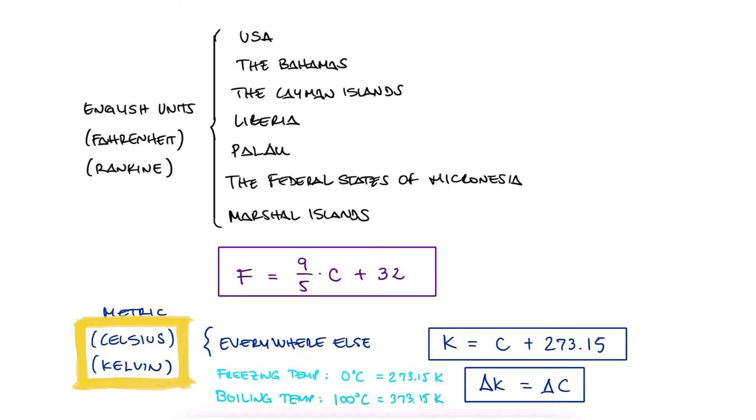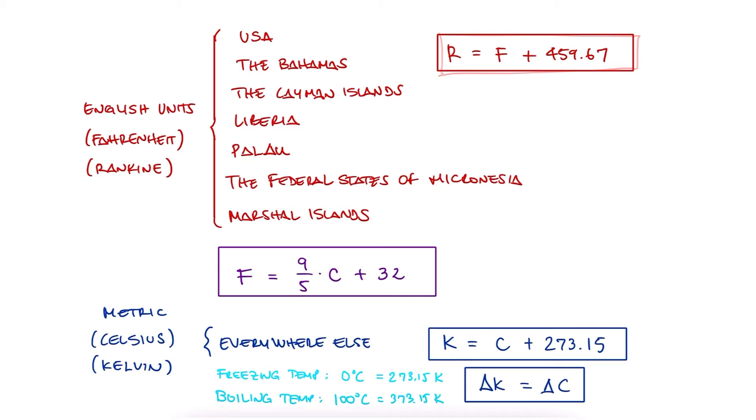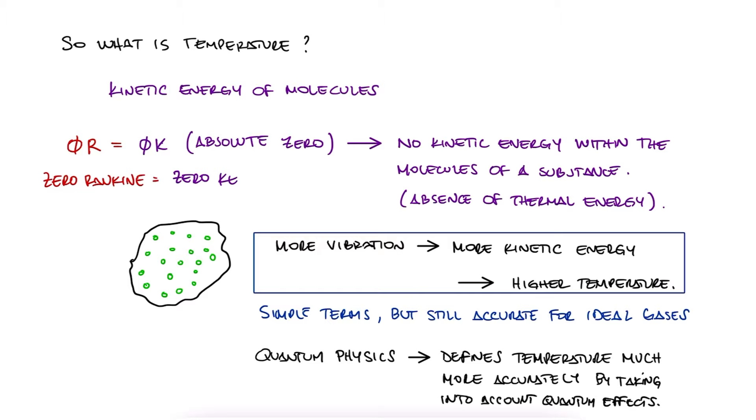And finally, we have Rankine. Just like Kelvin is to Celsius, Rankine is just a shift of the Fahrenheit scale. Fahrenheit and Rankine are both English units, just like Celsius and Kelvin are metric units. Rankine is just 459.67 more than degrees Fahrenheit. And zero Rankine is also the absence of thermal energy, just like zero Kelvin. And just like we related Celsius and Fahrenheit, Rankine and Kelvin can also be related. Notice that it's still the same 9 over 5 slope for the linear relationship we have, except they both begin in the absolute zero and therefore have no shift for their y-intercept of that y equals mx plus b line that describes their relationship.